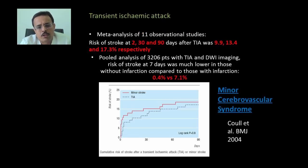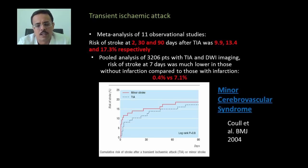Coming to the setting of transient ischemic attack: a published meta-analysis has shown that the risk of stroke at 2, 30, and 90 days is 9.9%, 13.4%, and 17.3% respectively. That means the risk is very high within the first few weeks. The graph clearly shows the risk of stroke after TIA — one can see how high the initial risk is.